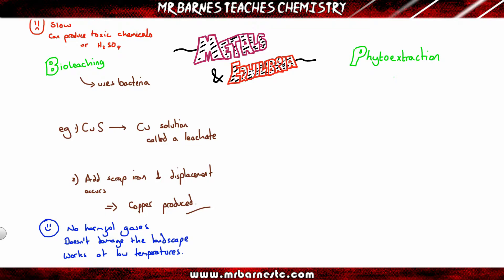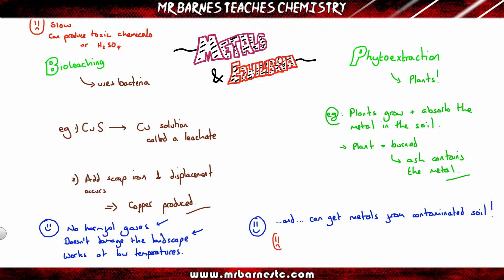The second way to extract your low grade ore is phytoextraction. Again, you can probably figure out from the name, that's to do with plants. What we do is take a plant, make it grow, and it will absorb any metals in the soil. When we then burn that plant, the ashes contain the metal, and again we can use displacement reactions to fully collect that metal. The benefits of this: it doesn't produce harmful gases and it doesn't damage the landscape, just like bioleaching. But it can also get metals from contaminated soil. That's a massive benefit. However, there are downsides. It's also slow and it's weather dependent. If you haven't got the climate, you can't grow the plants. If you can't grow the plants, you can't get the metal out of the ground. And it can also be more expensive than using electrolysis at times. So you have to weigh up the benefits and the consequences of using either method.